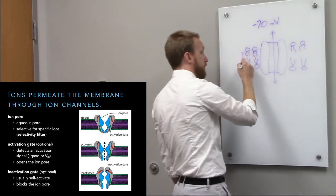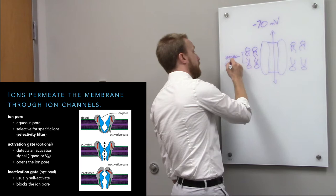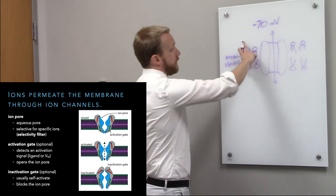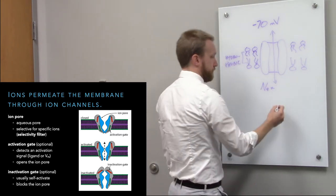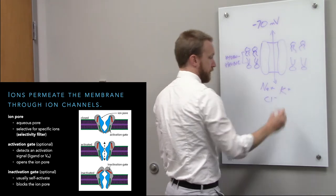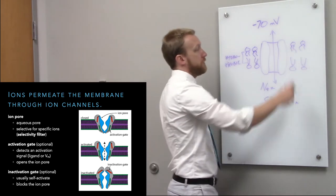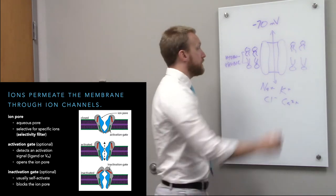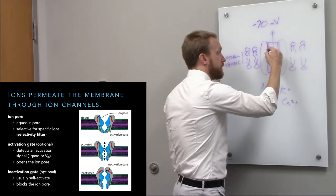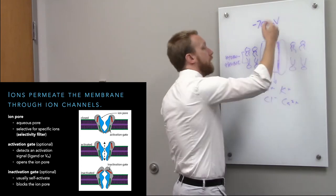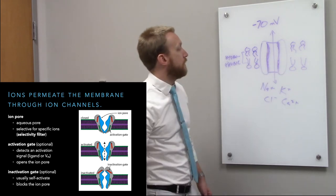These are phospholipids, so that lipid component is hydrophobic, hidden in the middle away from the water inside and outside the cell. Sodium, potassium, chloride, and calcium are all charged and cannot move through the membrane — they need a channel. At the very least, you need the ion pore: a hydrophilic component right in the center that ions can move through.